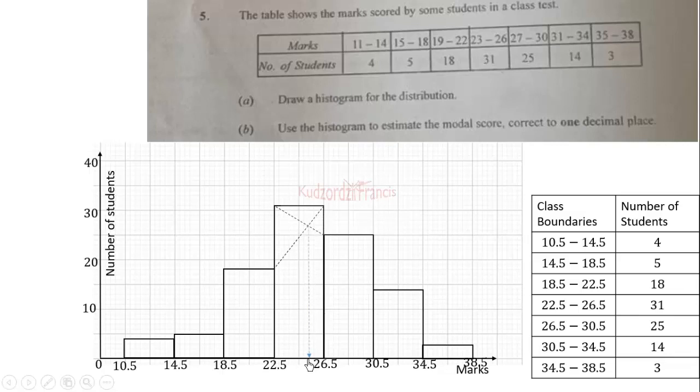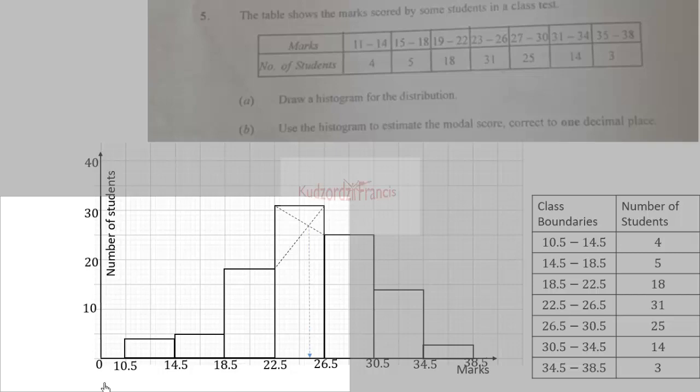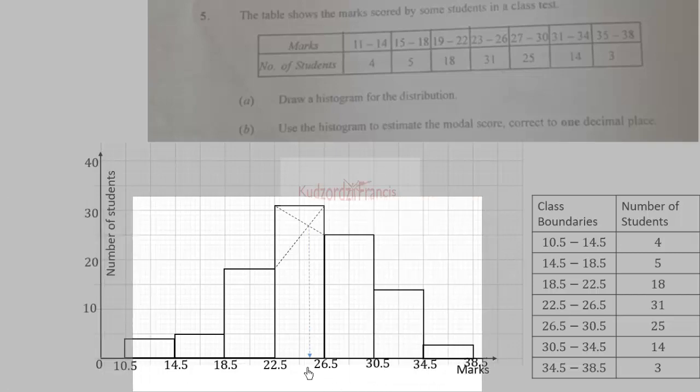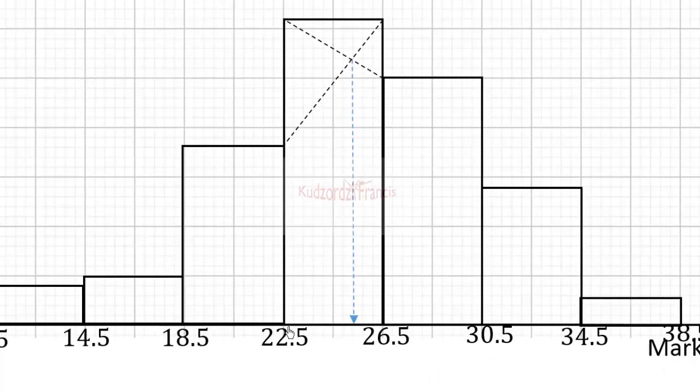We trace it and we can see that this point over here is one, two, three, four, five, six, seven units, seven boxes from 22.5.